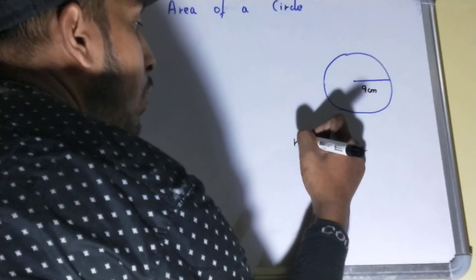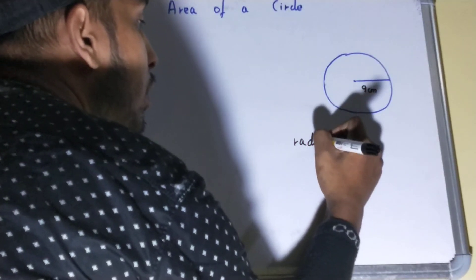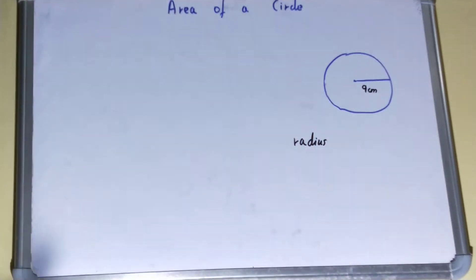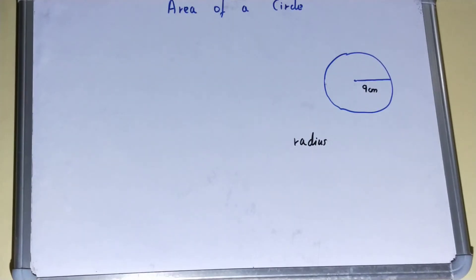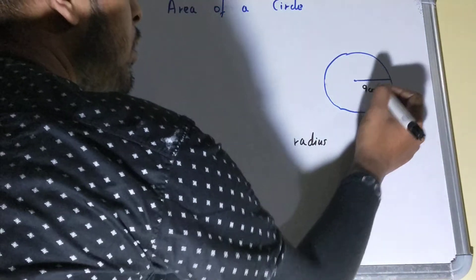What is the radius? Radius is basically the distance between the center of the circle and to the boundary of the circle. This is our radius. In the above case, our radius is 9 centimeters.